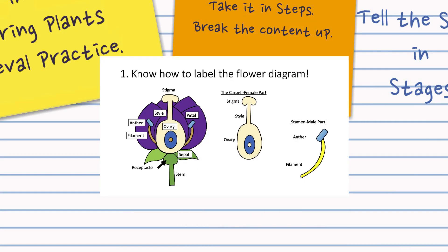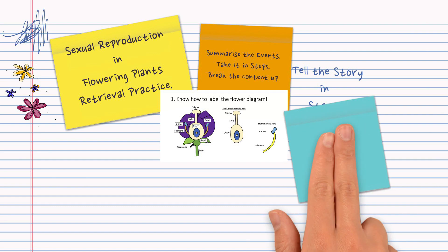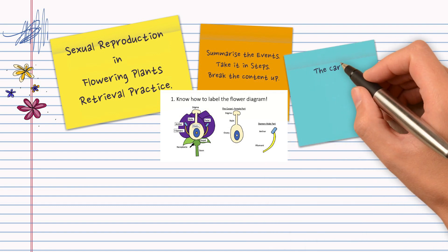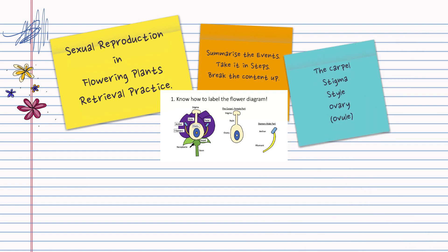So start at the beginning, know how to label the flower and what each part is for, particularly the sepal, don't forget that. So the carpel is the female part, it's made up of the stigma, the style, the ovary and inside is the ovule. And the stamen is the male part, it's made up of the anther and the filament.